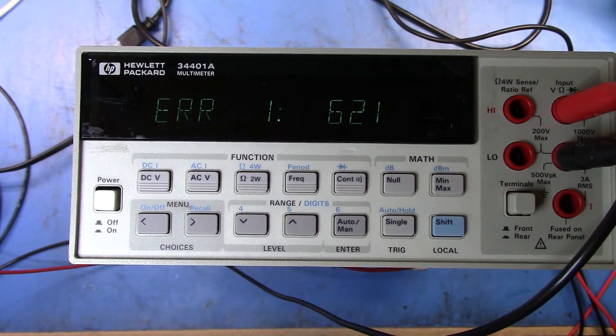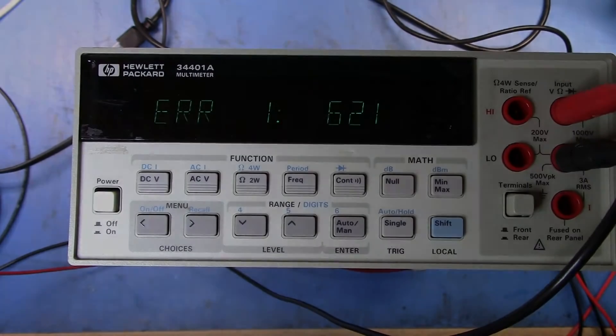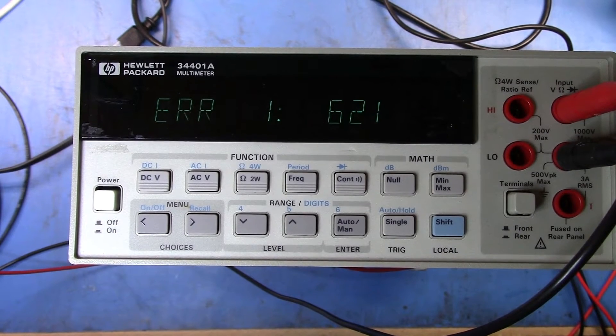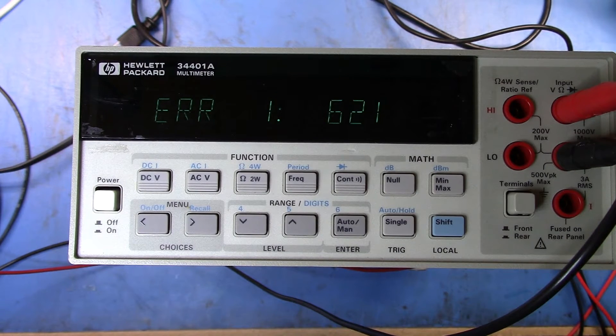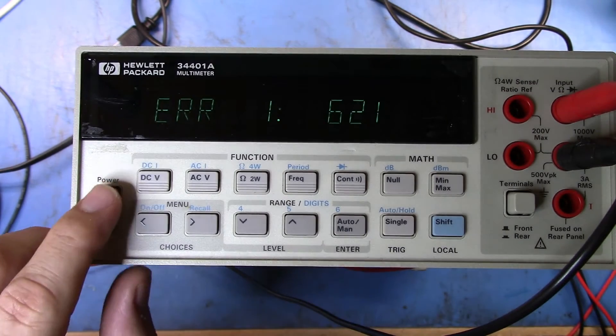Let's go take a quick look at the service guide and see what that error is. A quick look at the service manual tells me that 621 is an AC RMS full scale fail. And a quick little Google around tells me that it is a simple error, most likely caused by CR305. So, let's pull the unit apart and take a quick look at that.